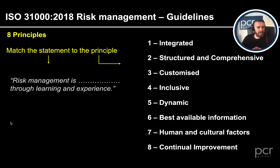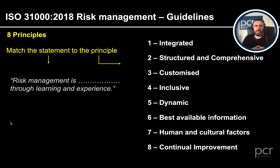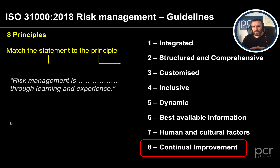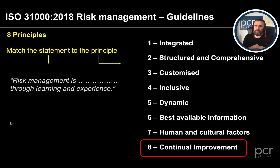And the last one. Risk management is something through learning and experience — that's going to be continually improved. It's continual improvement: plan, do, check, act. It's a cycle. We've got to go forward all the time. We won't get these things right first time, but next time round we will get them right. Those are the eight principles, and this is part of the delivery I'm working on.